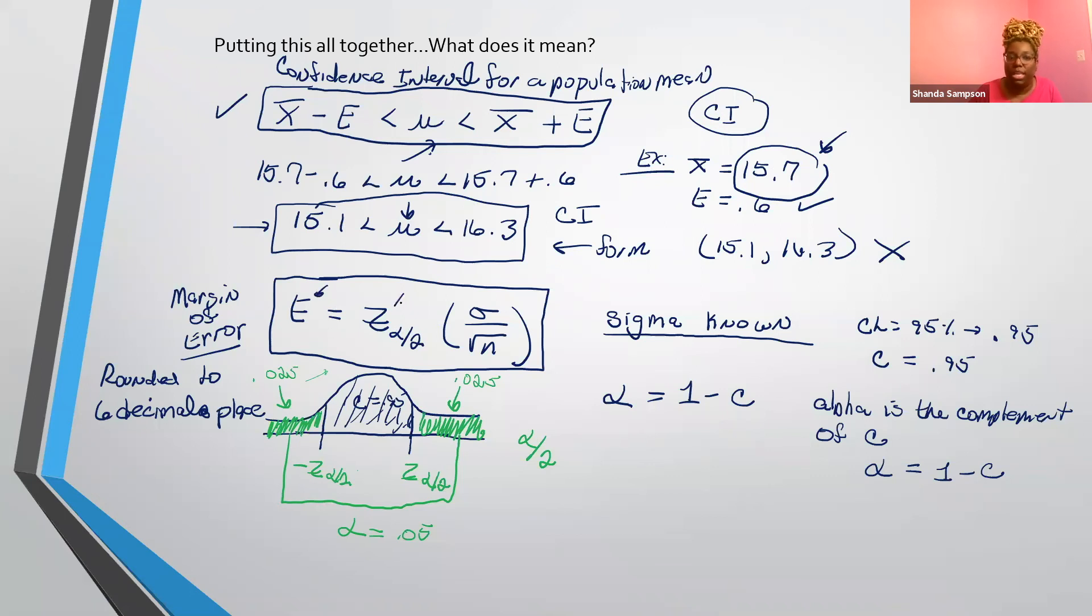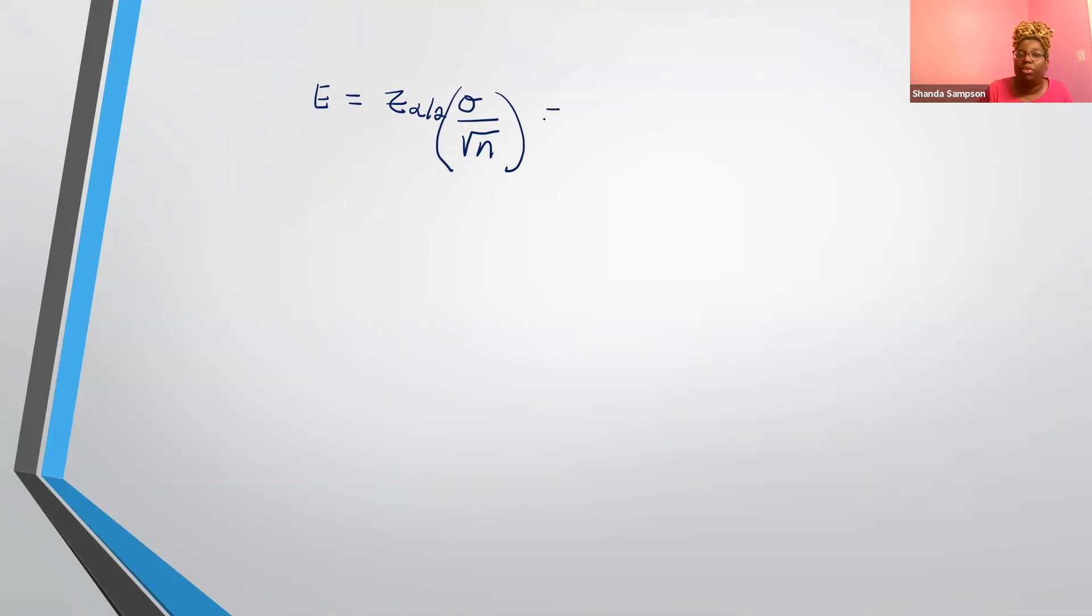So the last thing we want to take care of in this E thing. So we know what E is, we know what z alpha over two is, we do know what sigma is, that's the population standard deviation, and we assume that that's known, and then this is n. So remember, as in any other algebraic formula, we can move around anything and solve for another variable. So they could give you any three of these variables and have you solve for another. Now, just for fun, I'm going to show you how to solve for n.